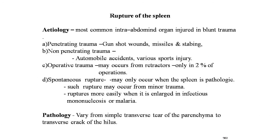Rupture of the spleen: the spleen is the most common intra-abdominal organ injured in blunt trauma. Various ruptures occur from penetrating trauma (gunshot wounds, missiles, stabbing wounds) and non-penetrating trauma (automobile accidents, sports injuries). Operative trauma may occur from retractors in about 2% of operations. Spontaneous rupture occurs only when the spleen is pathologic; rupture occurs more easily when the spleen is enlarged in infectious mononucleosis or malaria.